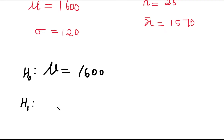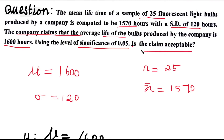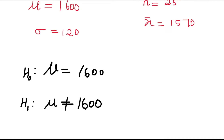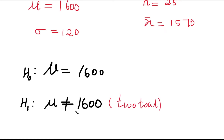For the alternative hypothesis: since the question asks if the claim is acceptable, we write H1: μ ≠ 1600 — that is, not equal to 1600. This gives two possibilities — greater than or less than — so this is a two-tailed test. If the question used 'greater than' or 'less than' wording, we would write a one-tailed test on H1.